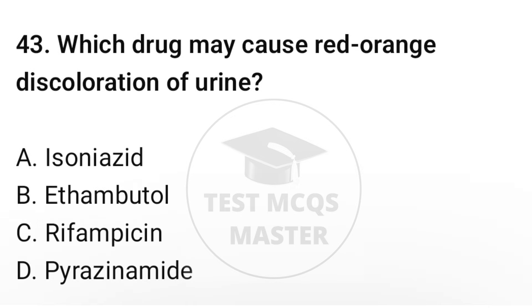Question number forty-three: which drug may cause red or orange discoloration of urine? The correct option is C: Rifampicin.